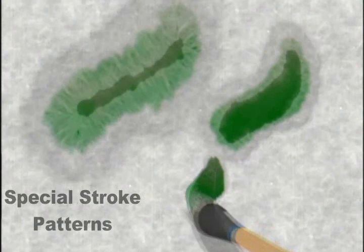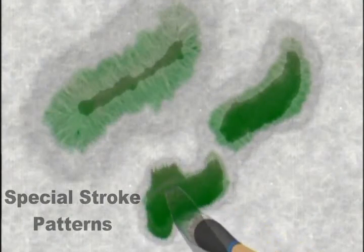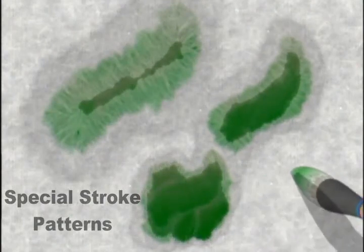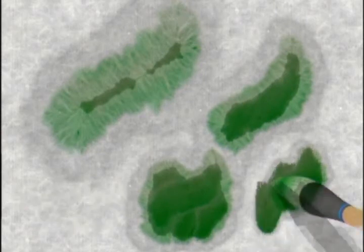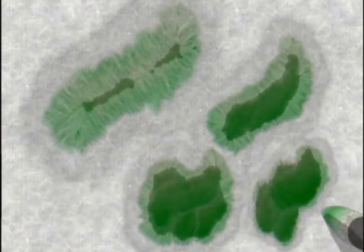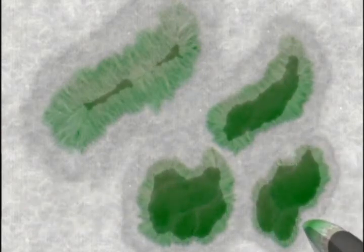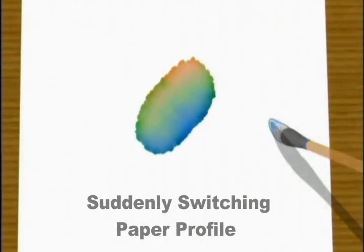Special other patterns are possible by tinkering with the simulated physics. Here we show some exotic patterns produced by modifying our ink advection scheme. This shows a shaft-like pattern produced by suddenly changing paper parameters.